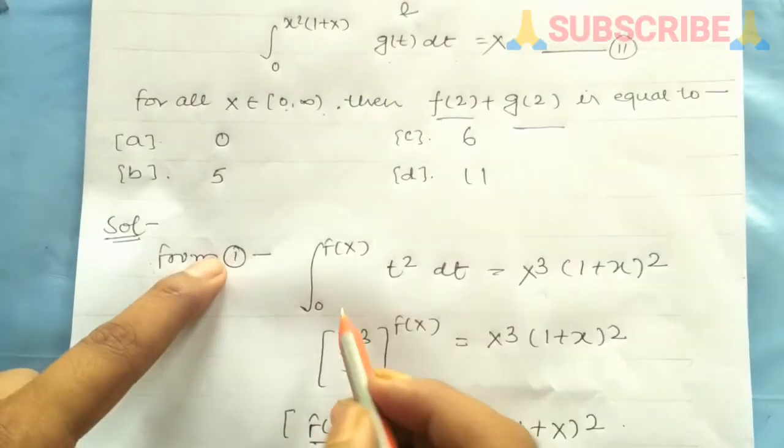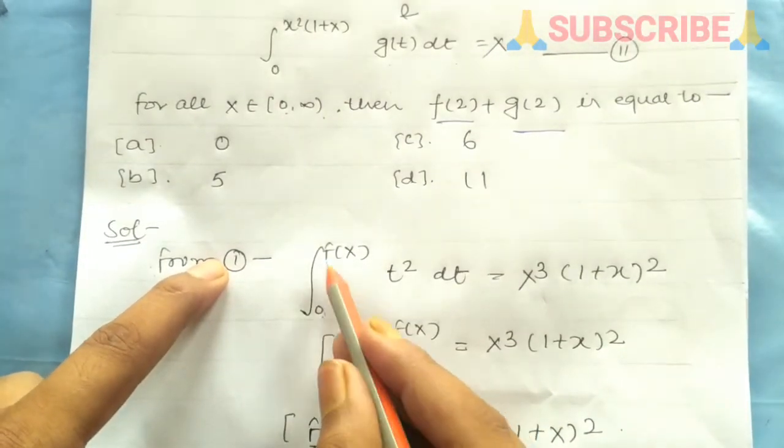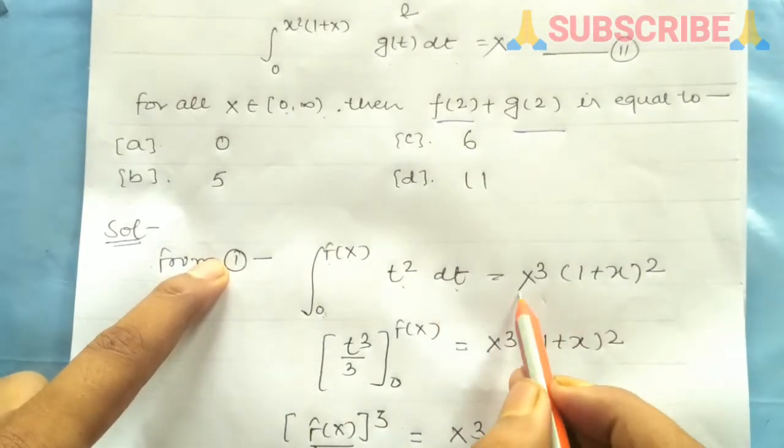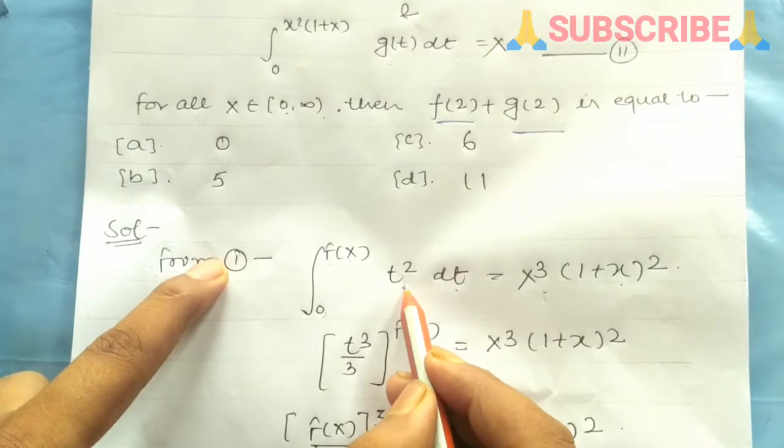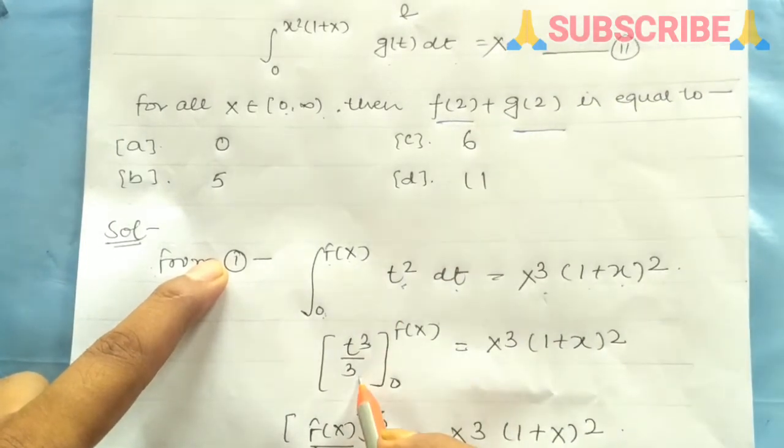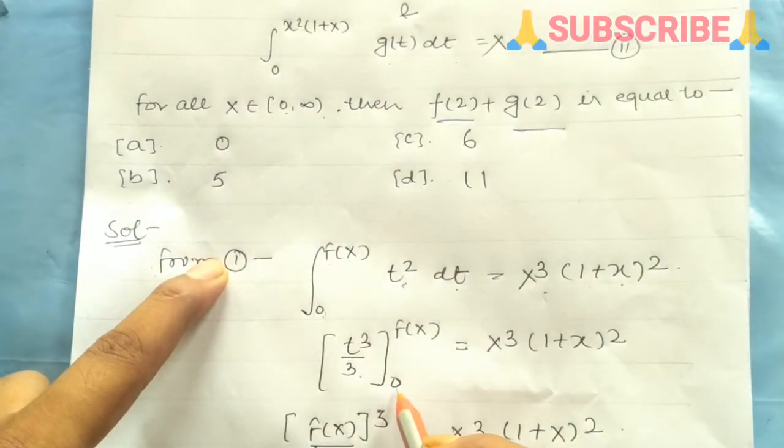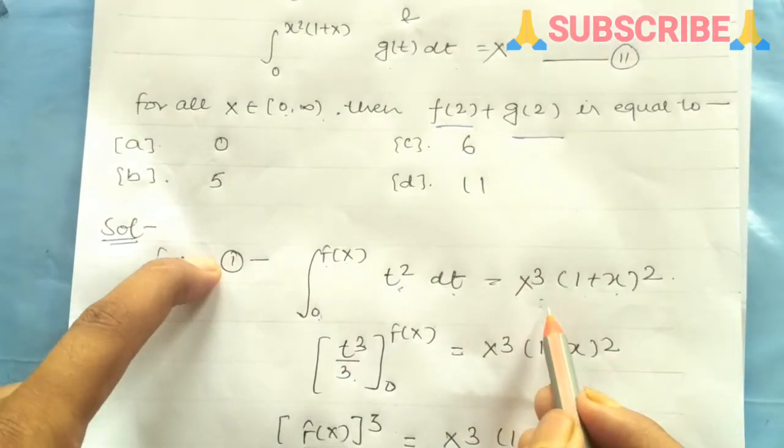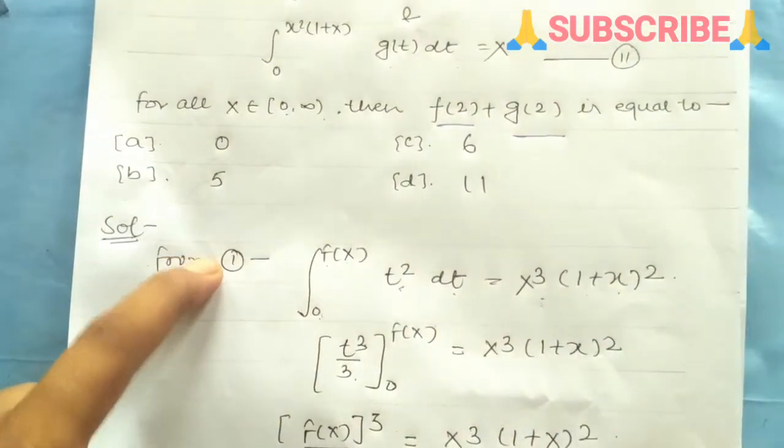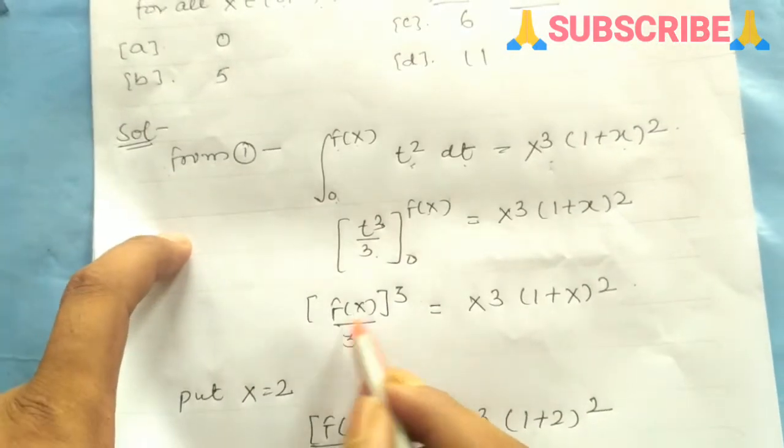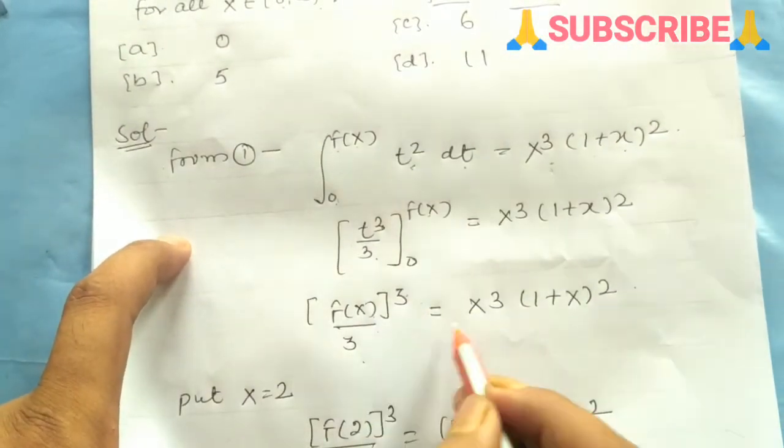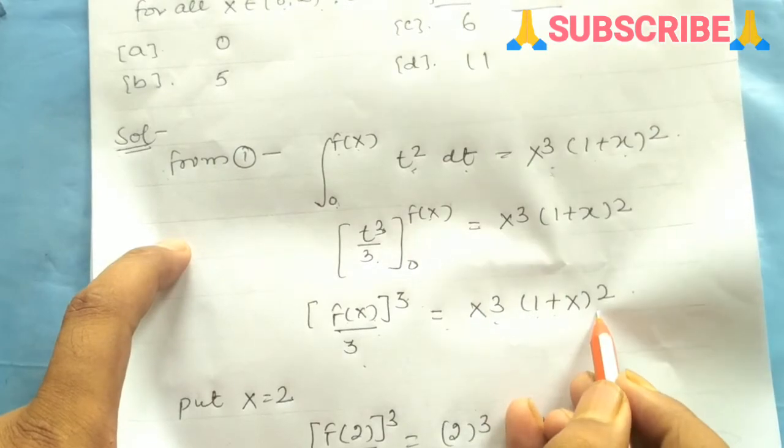From equation 1: we have integral from 0 to f(x) of t² dt equals x³(1+x)². Evaluating the integral: [t³/3] from 0 to f(x) equals x³(1+x)². Now, upper limit minus lower limit: f(x)³/3 equals x³(1+x)².